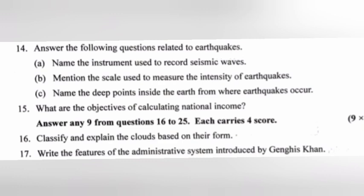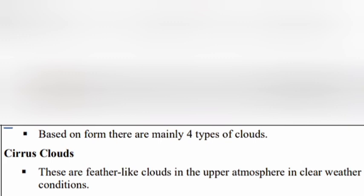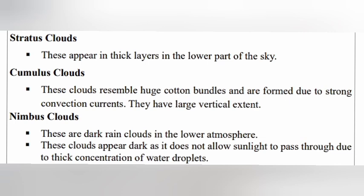Question 16: Classify and explain the clouds based on their form. Answer: Based on form there are mainly four types of clouds. Cirrus clouds — feather-like clouds in the upper atmosphere in clear weather. Stratus clouds — appear in thick layers in the lower part of the sky. Cumulus clouds — resemble huge cotton bundles, formed due to strong convection currents with large vertical extent. Nimbus clouds — dark rain clouds in the lower atmosphere that do not allow sunlight to pass through due to thick concentration of water droplets.